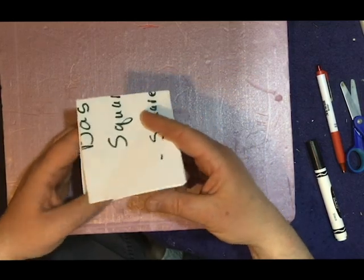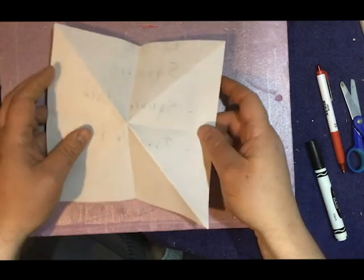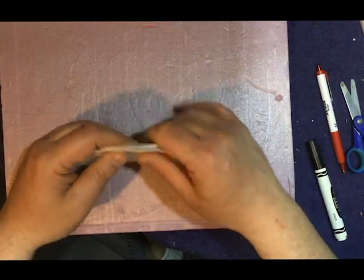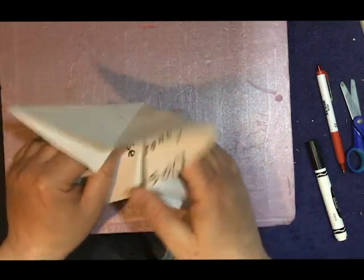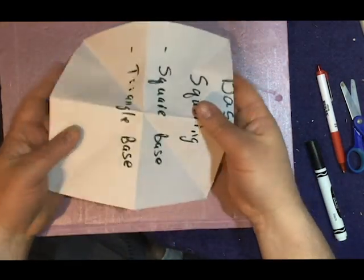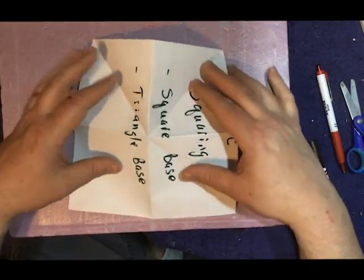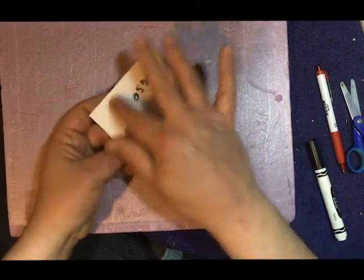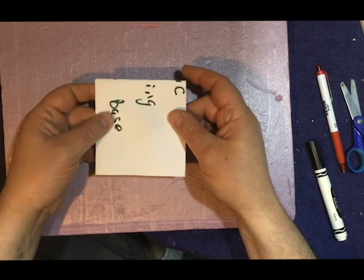One more time. Triangle base - again, make sure your triangles are up. And then square base - flip it upside down, pull them together. You'll end up with this diamond looking thing, but if you turn it on the side, you actually see the square base.